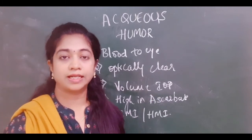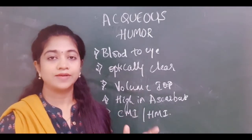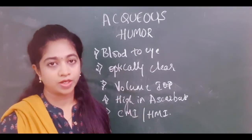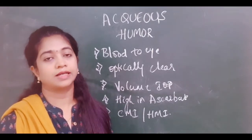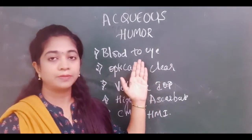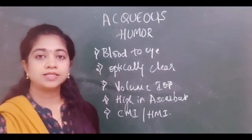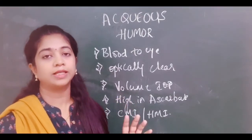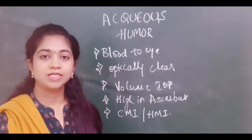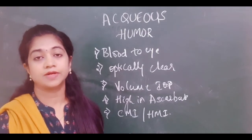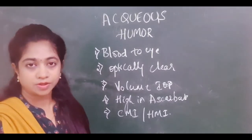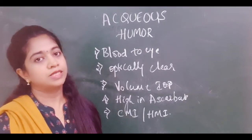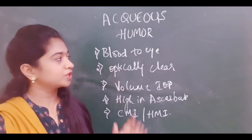Aqueous humor has certain functions in the eye. It acts as blood to certain avascular structures in the anterior segment like the lens and the cornea. It provides nutrition in the form of glucose and amino acids, provides potassium, and removes metabolic byproducts like carbon dioxide, lactic acid, and pyruvic acid. Secondly, it provides a clear optical medium so that light rays can easily reach the retina. Third, it adds volume to the eyeball thereby contributing to intraocular pressure. The aqueous humor is also rich in ascorbic acid, which protects the eye against free radicals and UV radiation damage. Finally, in cases of inflammation and infection, the aqueous humor acts as a medium for transport of components of cell-mediated as well as humoral-mediated immunity.